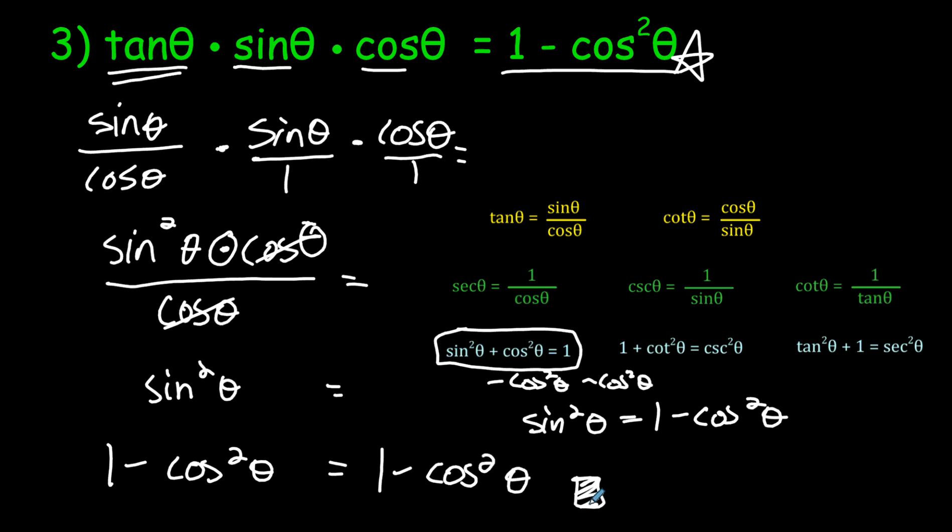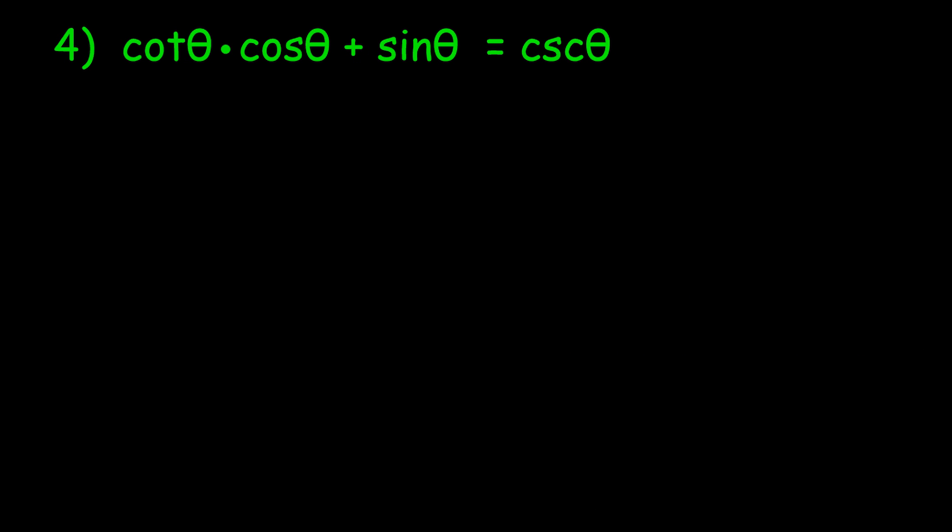As you've seen through three examples, you want to use these identities and manipulate one side — usually the left side, but sometimes the right — until you eventually end up with what's on the other side, and then your proof is done. Last example: cotangent theta times cosine theta plus sine theta should simplify to cosecant theta. Pause it and give it a shot on your own, and if you get stumped, hit play again.